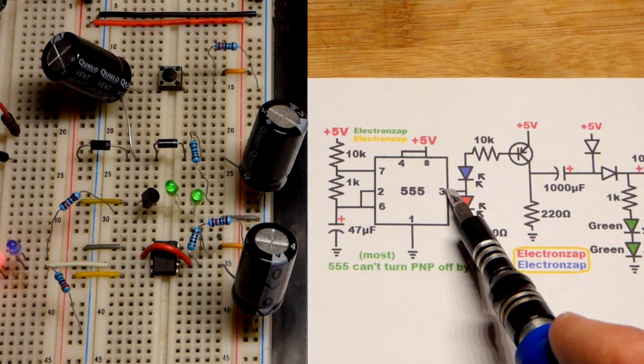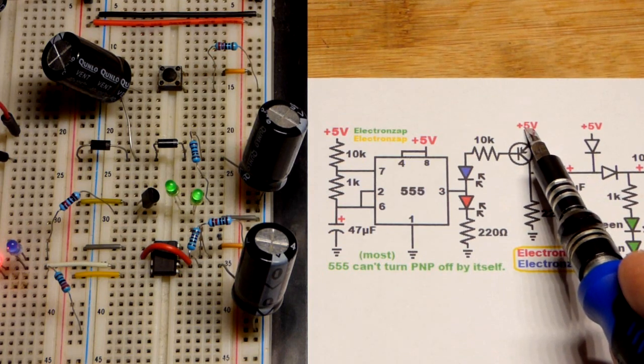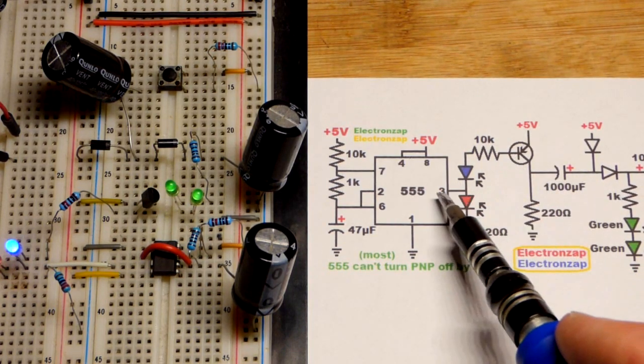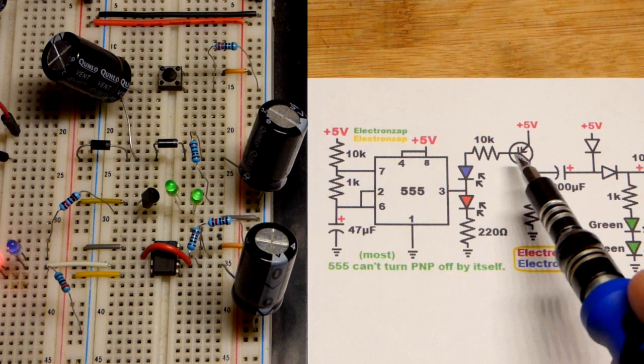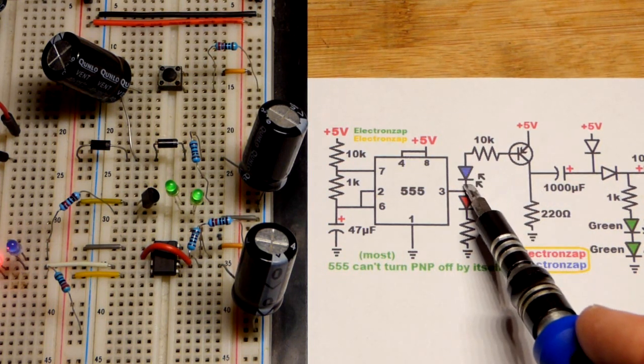But in any case it can't output 5 volts it falls short maybe 3.5 about a volt and a half short of the power supply. That is a voltage difference 5, 3.5 so current will flow and the transistor will never turn off.